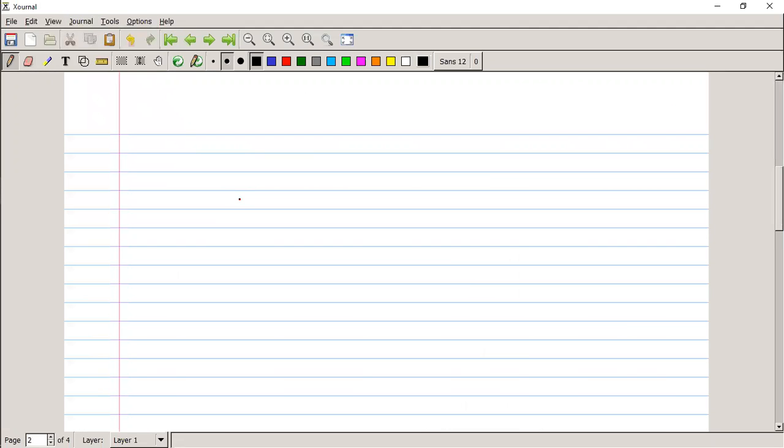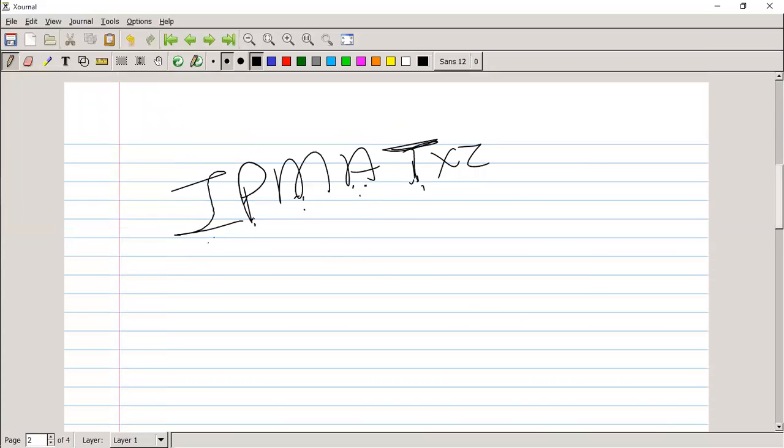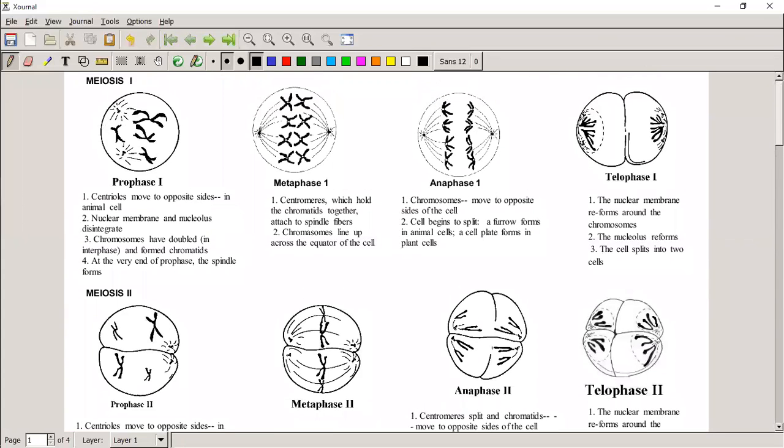I always remember the process of meiosis by using IP on the MAT: IP MAT - Interphase, Prophase, Metaphase, Anaphase, Telophase. And then we say with meiosis that you're going to be on the mat twice. So you've got Interphase, Prophase I, Metaphase I, Anaphase I, Telophase I, Prophase II, Metaphase II, Anaphase II, and Telophase II.